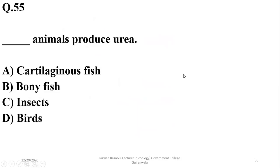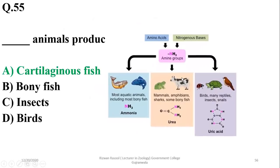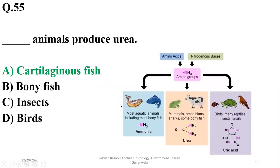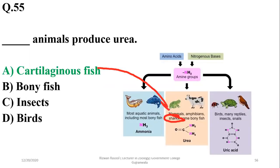Question 55: Animals that produce urea include cartilaginous fishes. Bony fishes usually produce ammonia. Insects and birds produce uric acid. Mammals, amphibians, sharks, and some bony fishes produce urea. Sharks are the major group of cartilaginous fishes, so shark seems the better option — A seems the better answer.